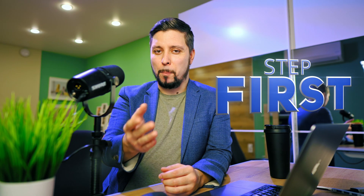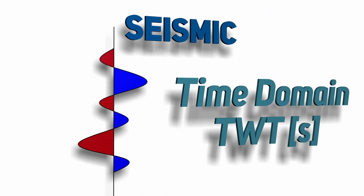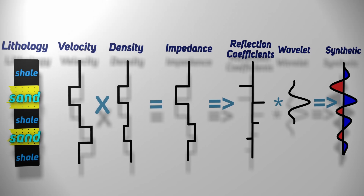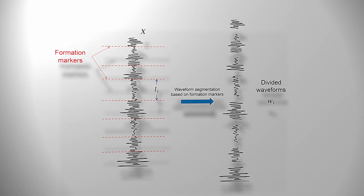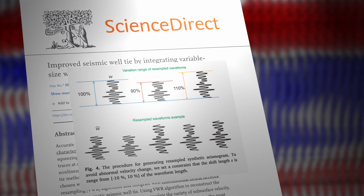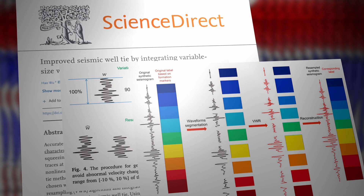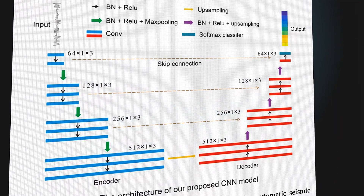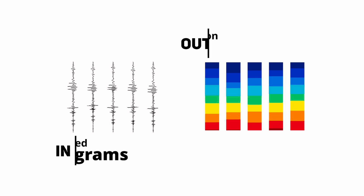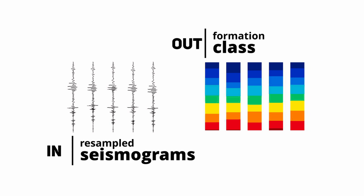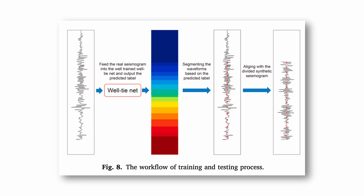The proposed method's time-depth function is smooth and doesn't change quickly. They achieve this using a two-step method. In the first step, subsurface velocity is simulated using seismic data and well logs — they extract a constant wavelet and generate synthetic seismograms using formation markers, divide the seismograms into segments, then produce numerous resampled synthetic seismograms by stretching or compressing those segments. In the second step, they train an unsupervised segmentation network with resampled seismograms as input and formation class as output. Once trained, it constructs a relation that maps real seismograms to the synthetic seismogram labels for alignment.